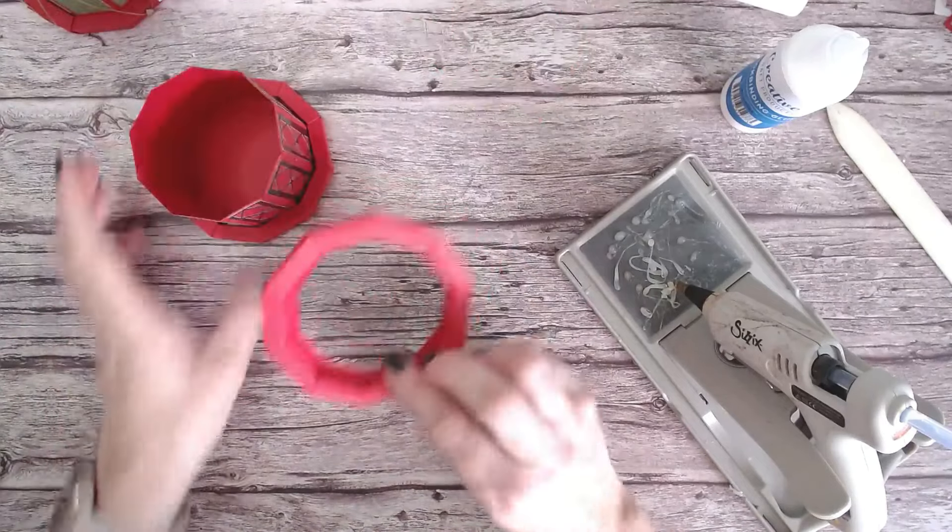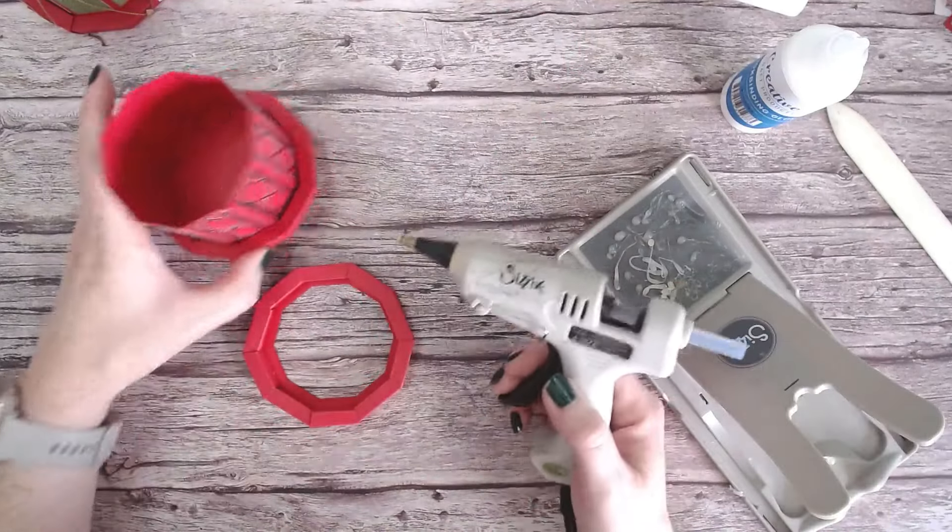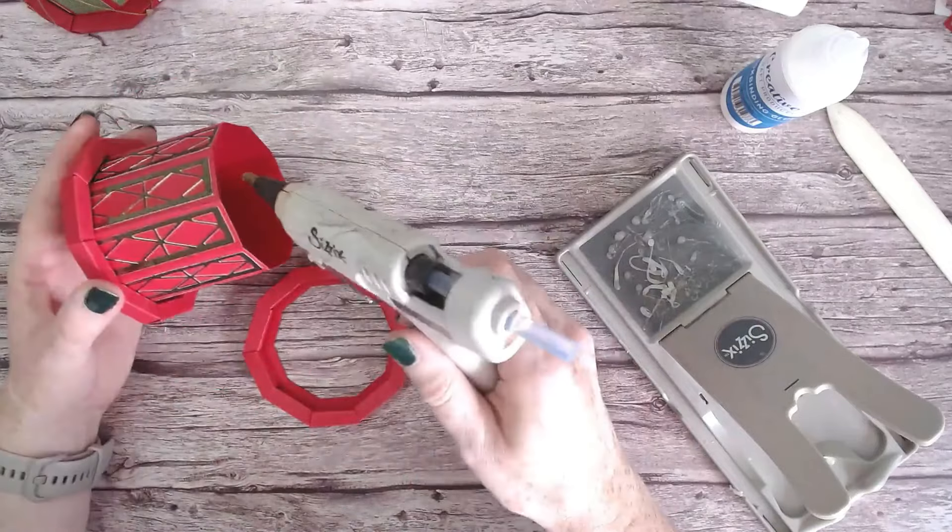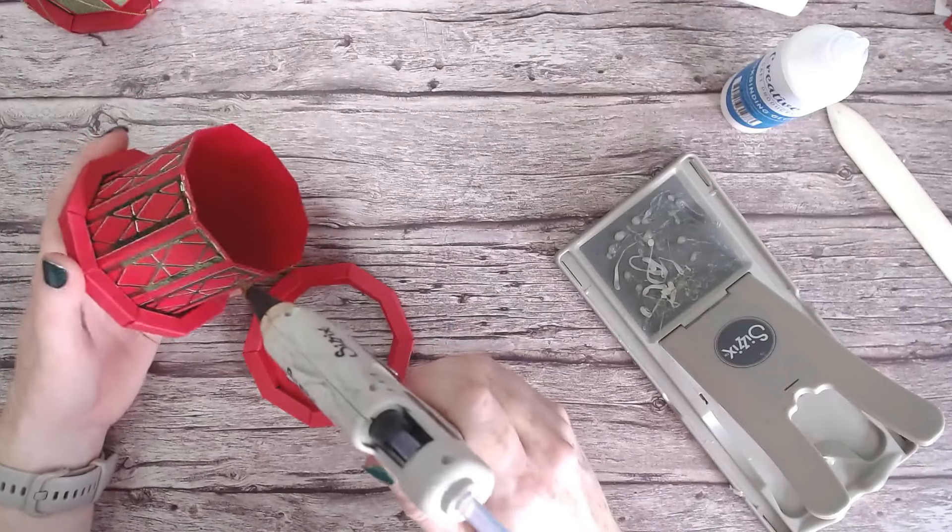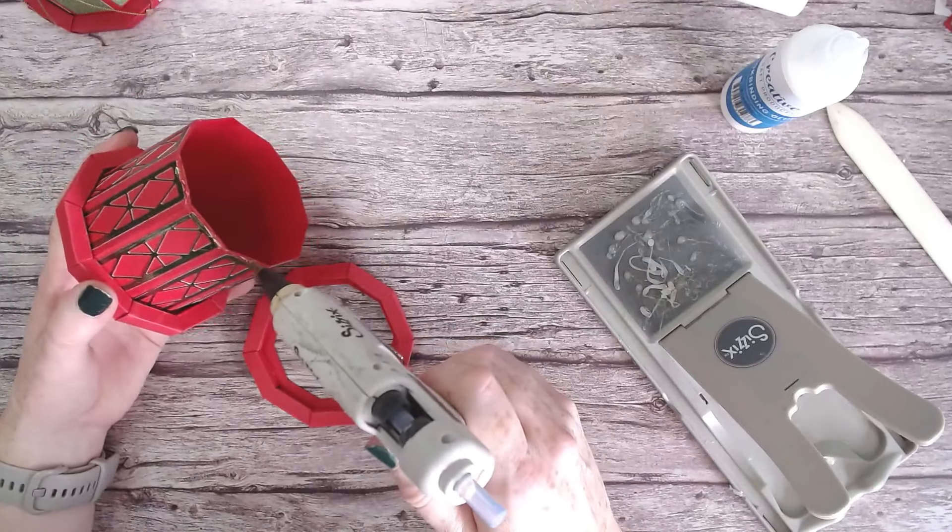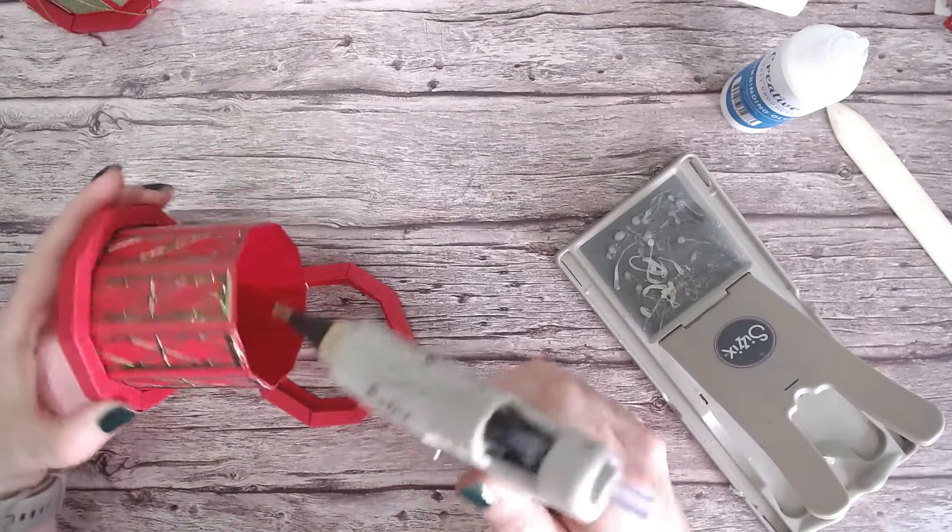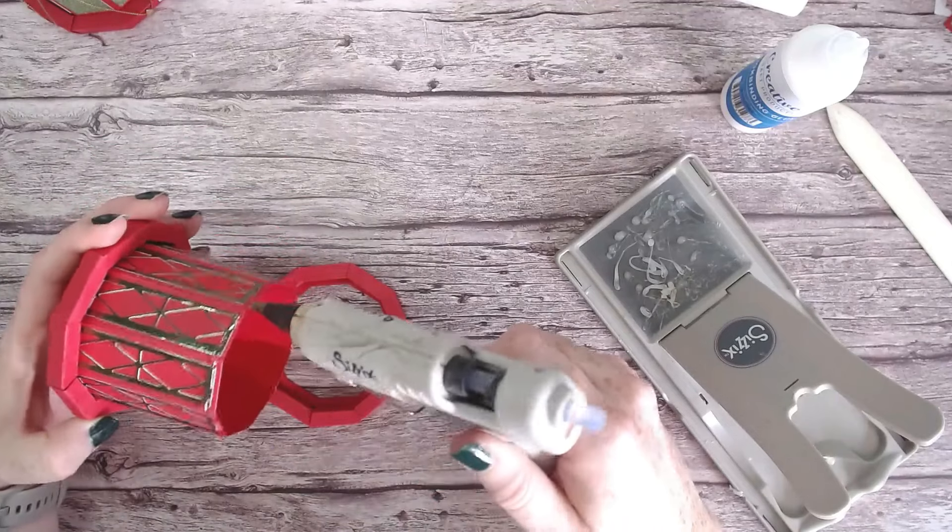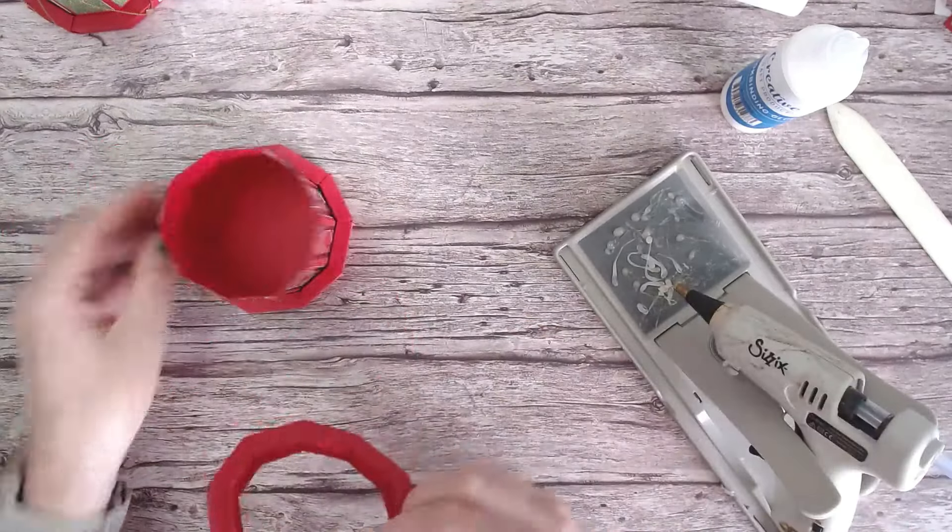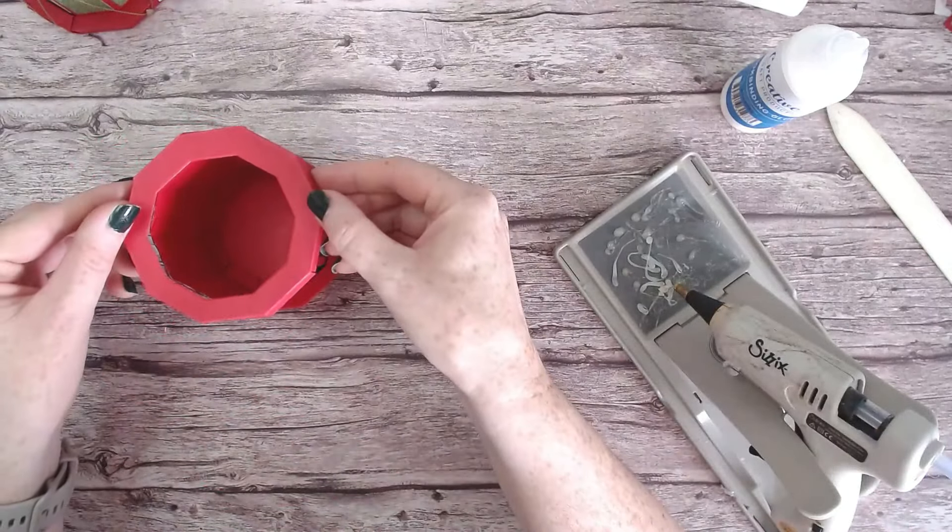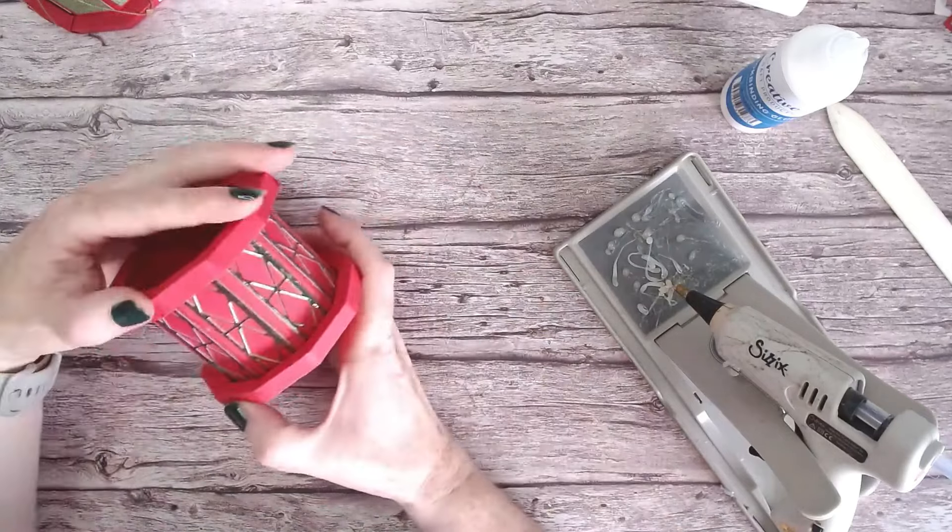Now let's sort out the lid. What I'm going to do is I'm just going to add hot glue all the way across the top here. You do need to be quick for this. And just make sure it's all lined up properly.